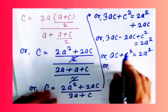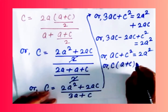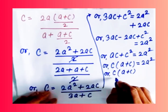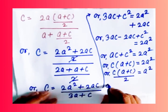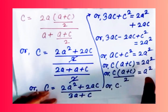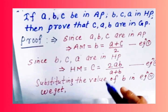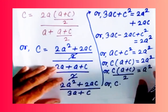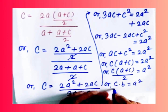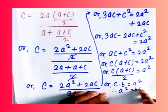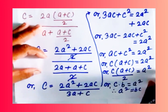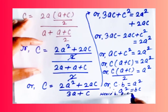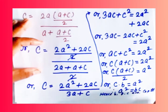Taking C as common factor: C(A plus C) equals 2A squared. Dividing both sides by 2 gives C times (A plus C)/2 equals A squared. Since (A plus C)/2 equals B from equation 1, substituting gives C times B equals A squared, i.e., A squared equals BC. Therefore C, A, B are in GP. Hence proved.